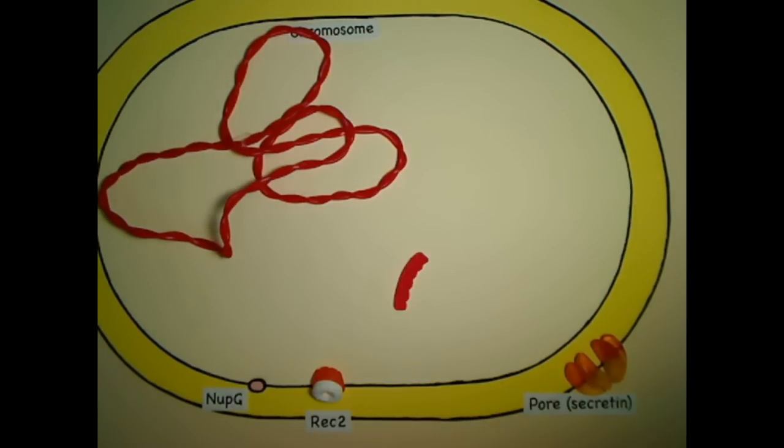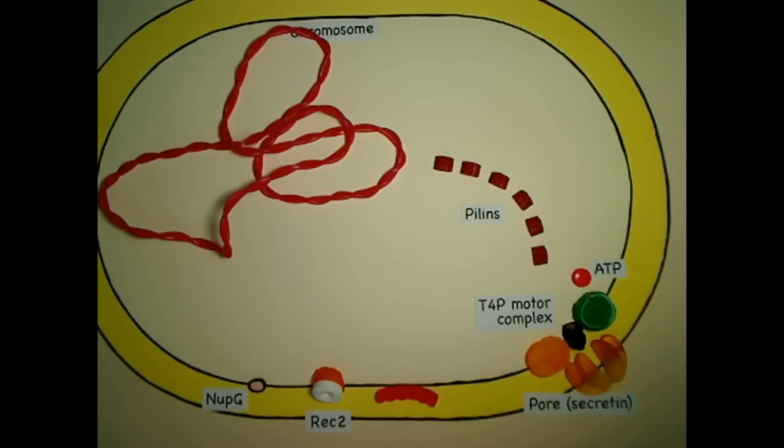Then the machinery that will actually pull the DNA into the periplasm is assembled. This is related to the machinery of type IV pili. It uses ATP as its energy source and forces transduced through a piston assembled from type IV pilins.